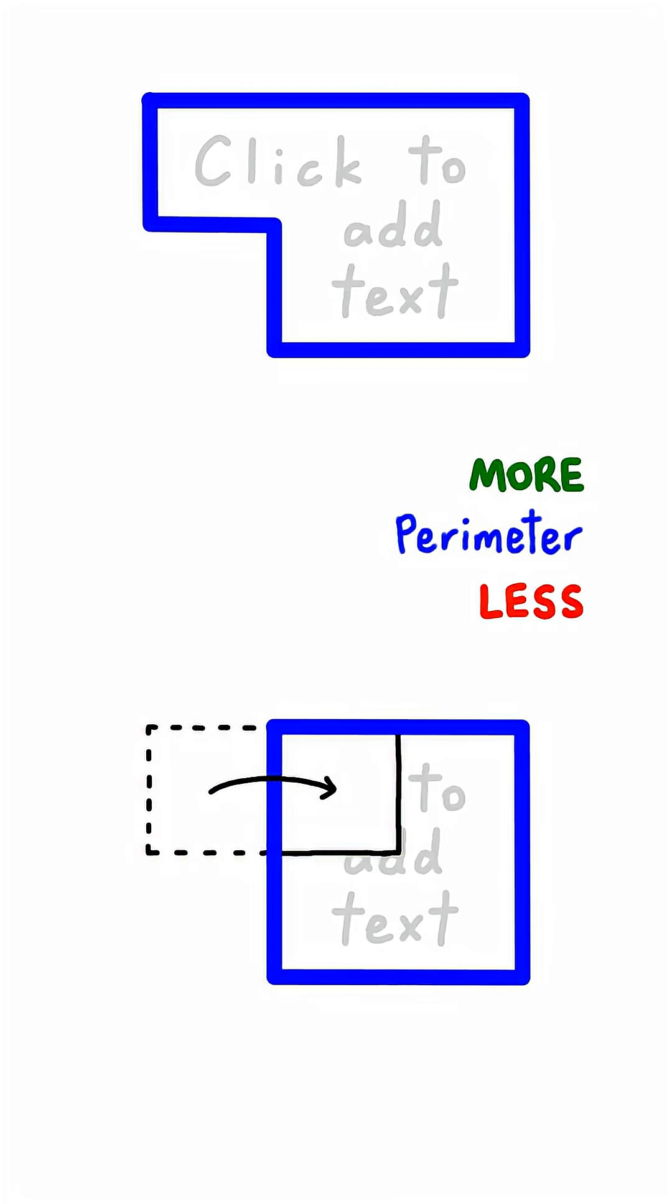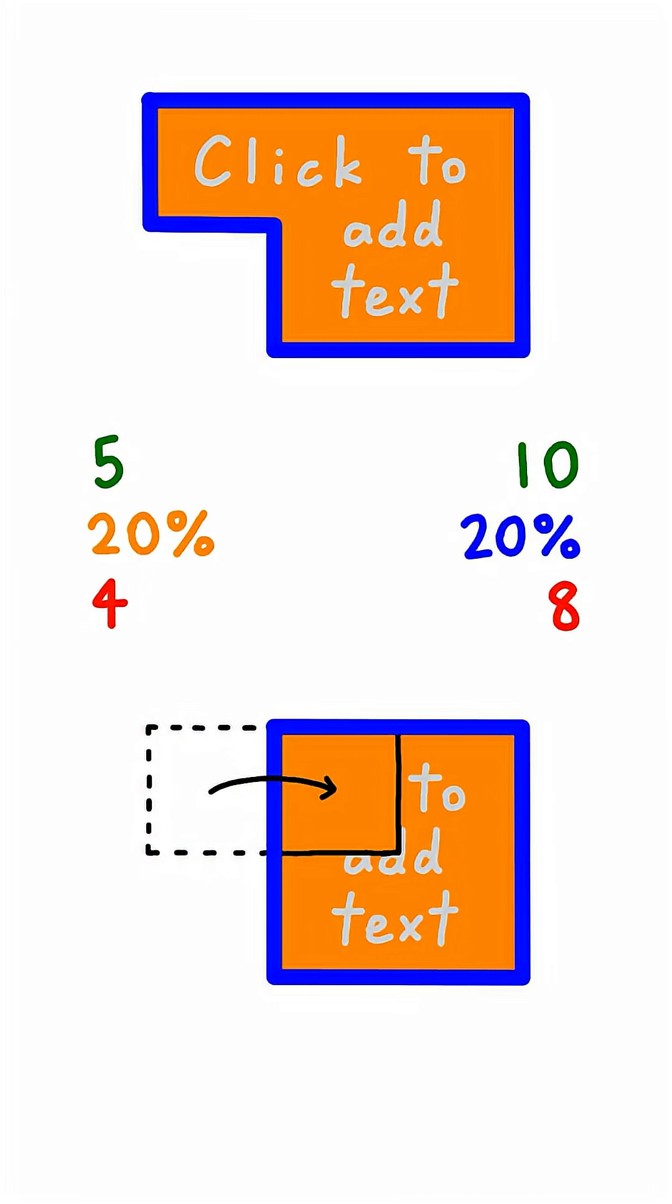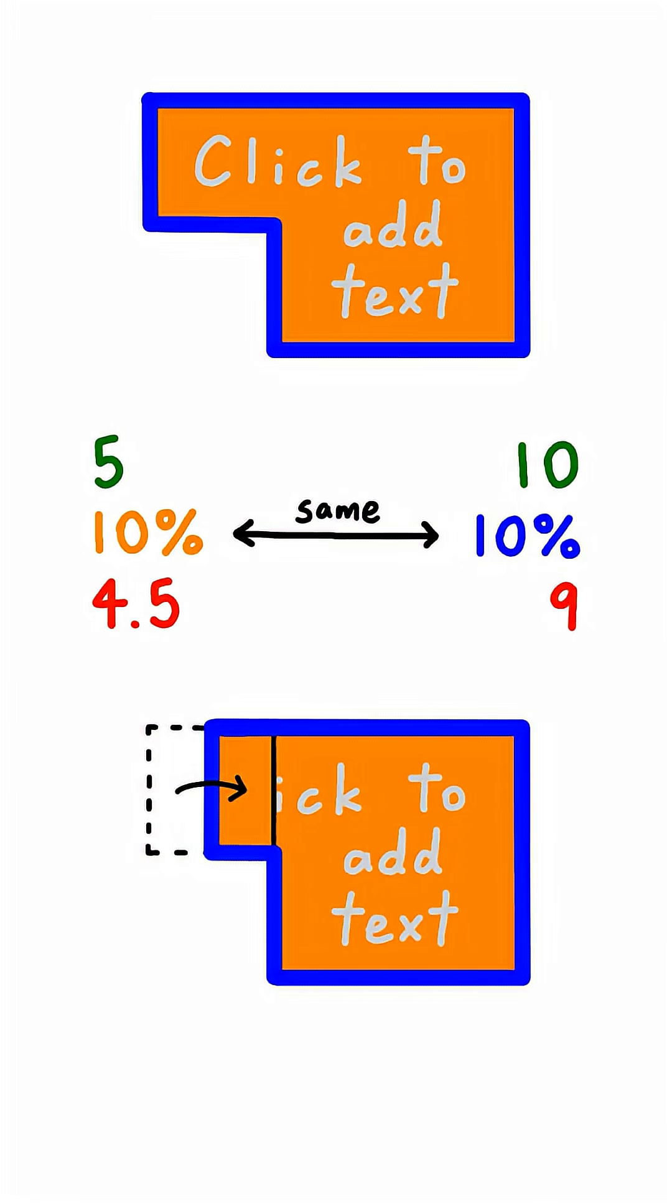Second fact: not only does the perimeter decrease, the area does as well, and it decreases by the exact same ratio. Here, both decrease by 20%, and if you fold it like this instead, both percentages change, but they're still the same. Just like the first fact, this works on paper of any shape.